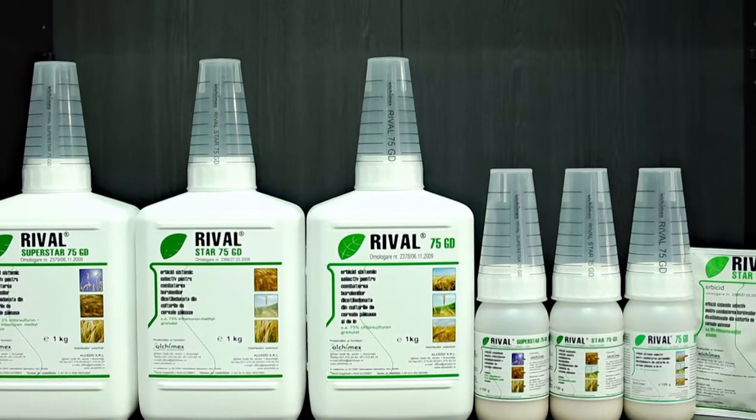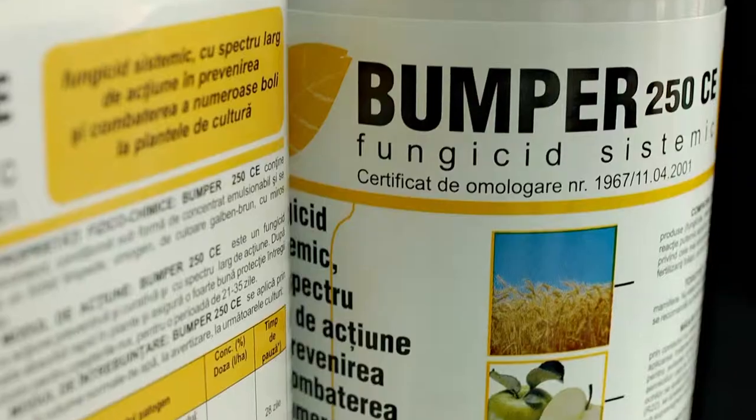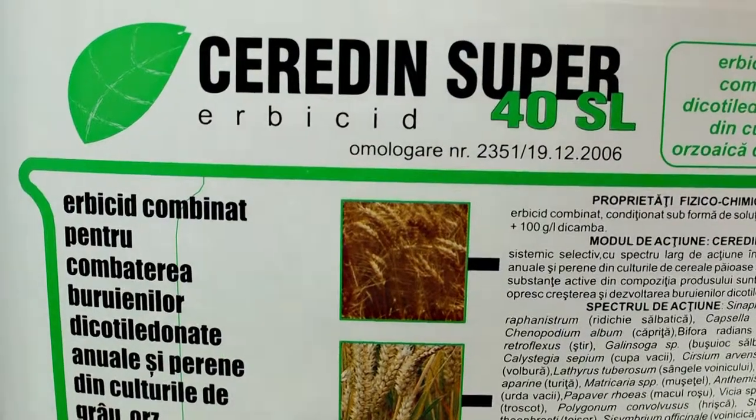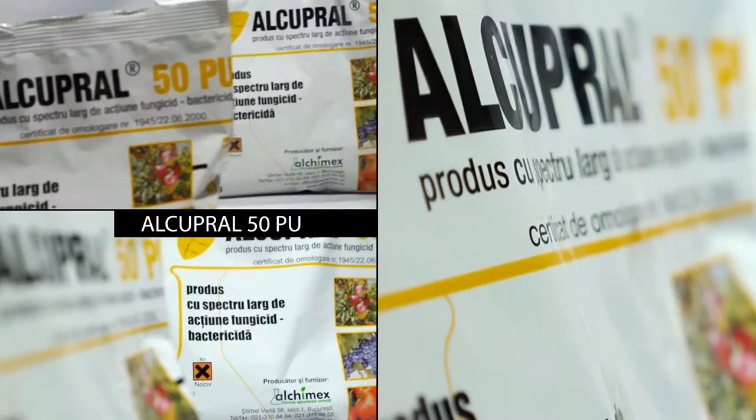Other acclaimed products formulated by Alcimex for the Romanian market are Bumper, Cedardine Super, Leopard, Targa, and Alcupral.